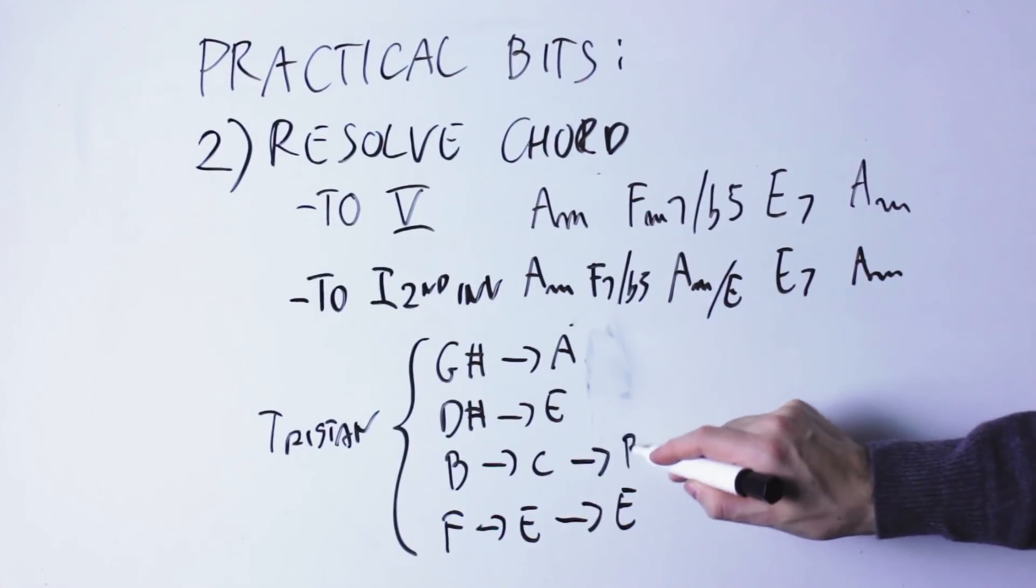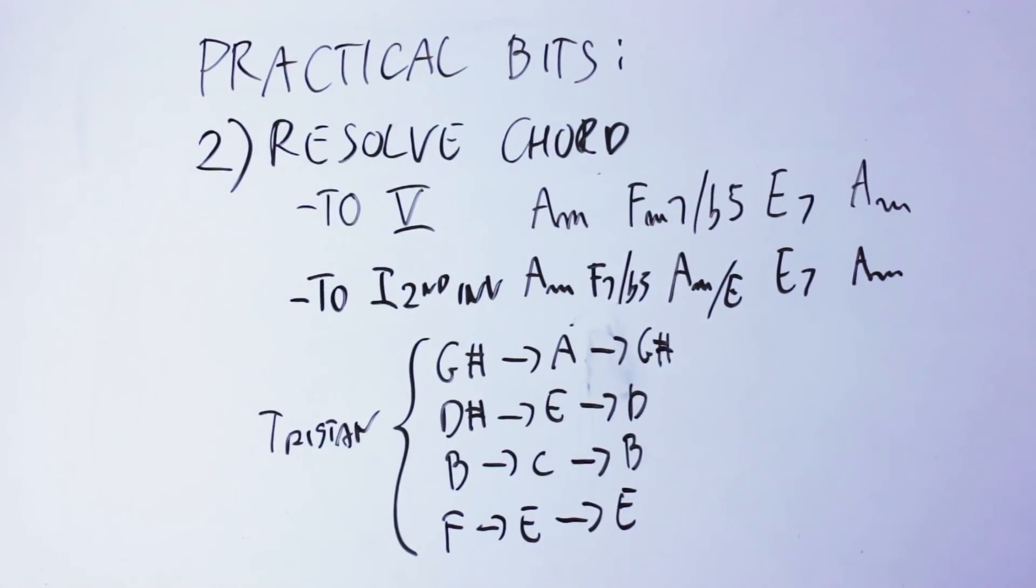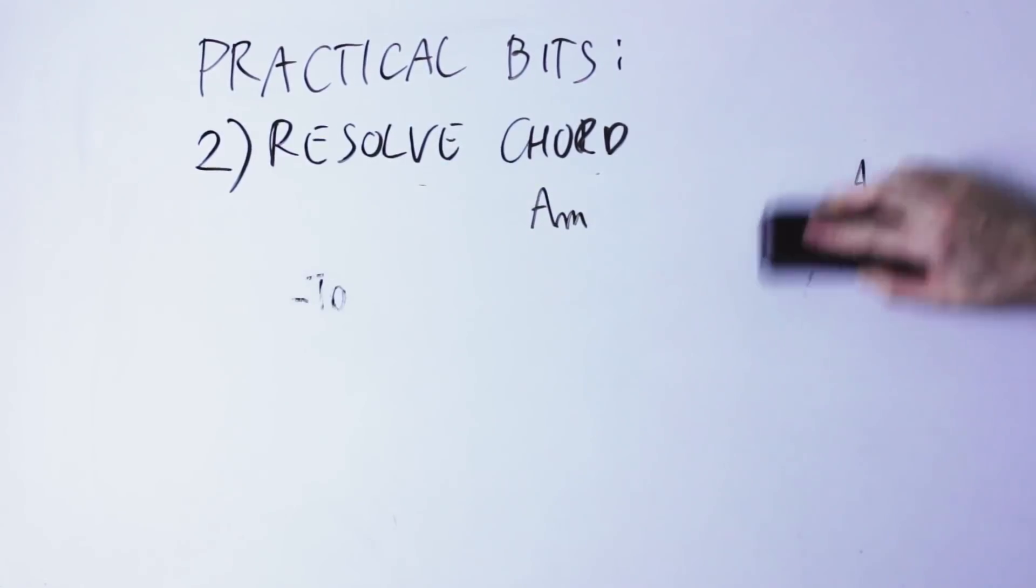Then when we move to the dominant chord, the lower E stays where it is, the C moves down to B, the E moves down to D, the A moves down to G sharp, creating the dominant chord.